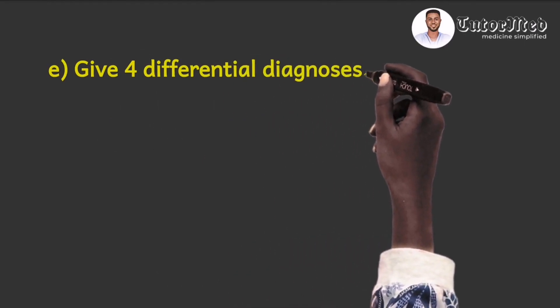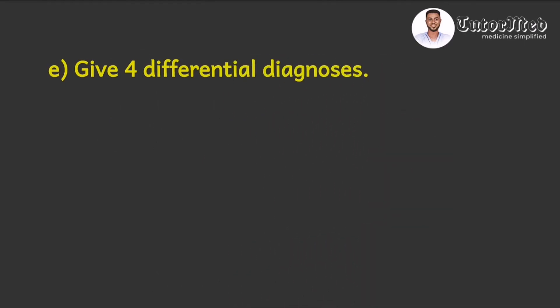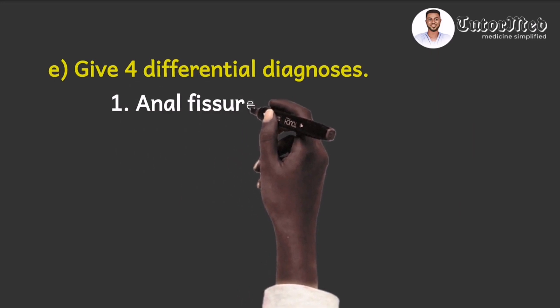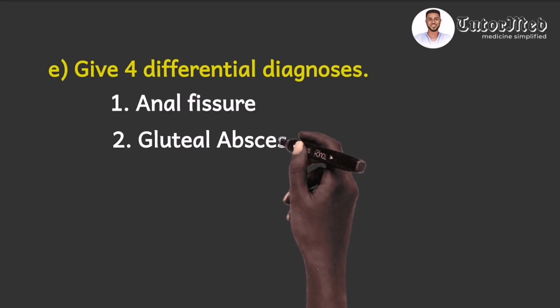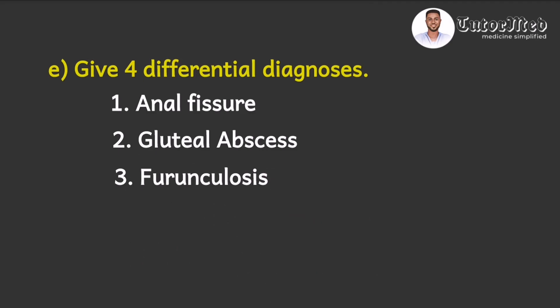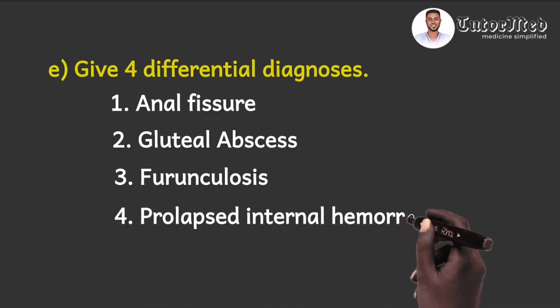The last question asked: give four differential diagnoses. This can be an anal fissure, which can also present with pain. It can be a gluteal abscess, which can also present with pain and fever. It can be a furuncle or folliculitis, which can also present with pain and fever. And then it can be a prolapsed internal hemorrhoid, or it can be a pilonidal disease. Any four of these written is the correct answer.